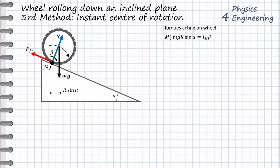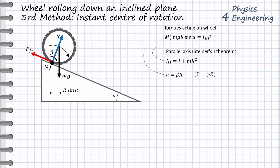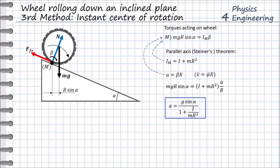This torque equals the moment of inertia of the wheel about point M times its angular acceleration. For this we use the parallel axis theorem (Steiner's theorem), which states that the moment of inertia about M equals the wheel's own moment of inertia I plus MR². We then use the relation between linear and angular acceleration and substitute both formulas into the torque equation. The resulting formula gives us the same solution for the linear acceleration as obtained by the first and second methods.